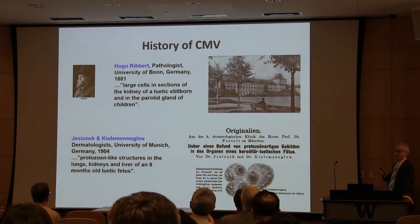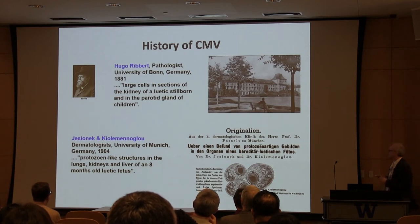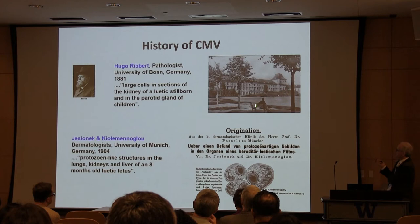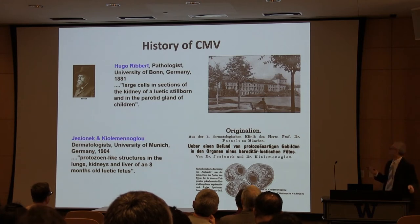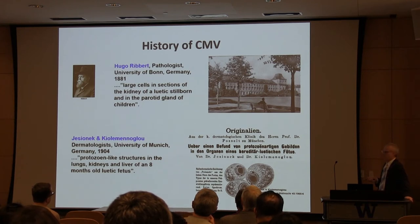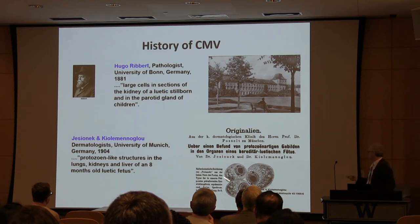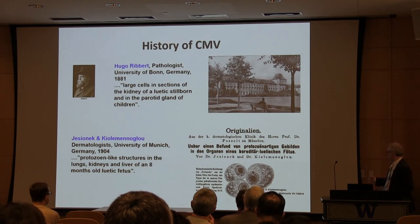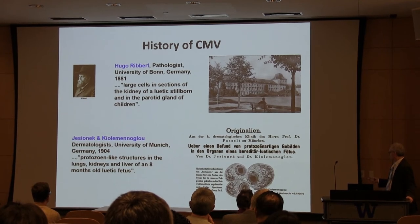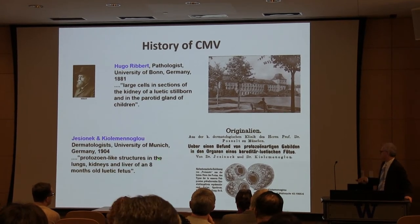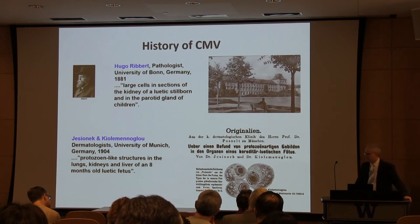CMV — or a structure that in hindsight was probably CMV — was first described in 1881 during a presentation by pathologist Hugo Ribbert in Bonn, where he described large cells in sections of tissue from a stillborn and in the parotid gland of children. A similar observation was made in Munich in 1904, and the two were combined in one publication showing pictures of these large, enlarged cells, called 'protozoan-like structures' in the lung, kidneys, and liver of small infants and stillborns, likely congenitally infected.